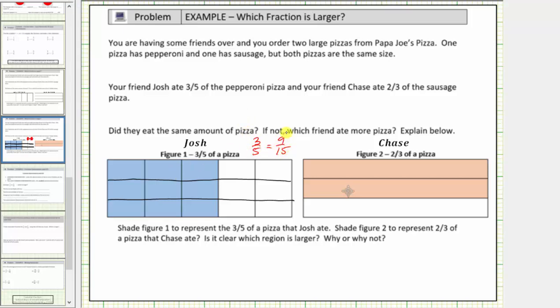And now we'll divide the model of two-thirds vertically into five equal parts, which would look like this. Again, notice how the pizza is now cut into fifteen equally sized pieces. Now ten of which are shaded, which tells us that two-thirds equals ten-fifteenths.